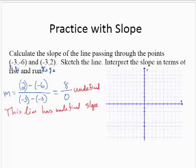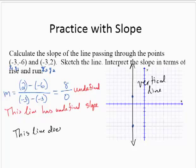Now if we plot those points, (-3, -6) and (-3, 2), and draw the line through those points, we see that we have a vertical line. Notice that this line does not run. It does not move at all to the left or to the right.